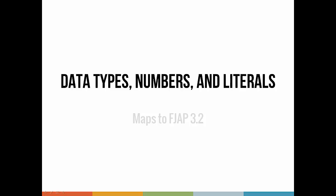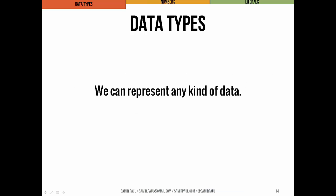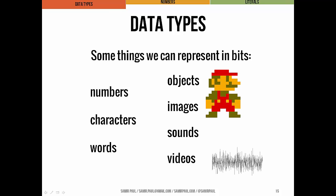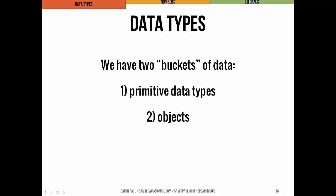We can start diving into some of the actual syntax and language basics. Let's talk about some of the data types, numbers, and literals. We can basically represent any kind of data — numbers, characters, words, even more complex things like images, sounds, and videos. We split these into two buckets: primitive data types, which are our simplest data types like integers and doubles, and objects, which we often conceive of as bigger and more complex.